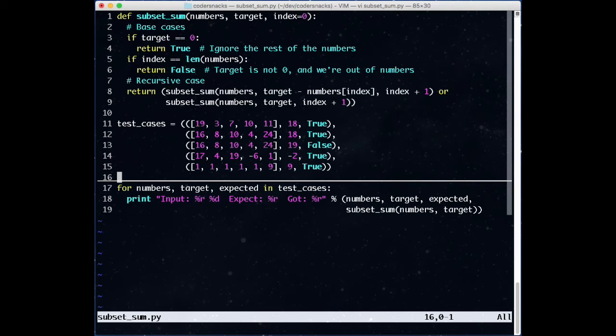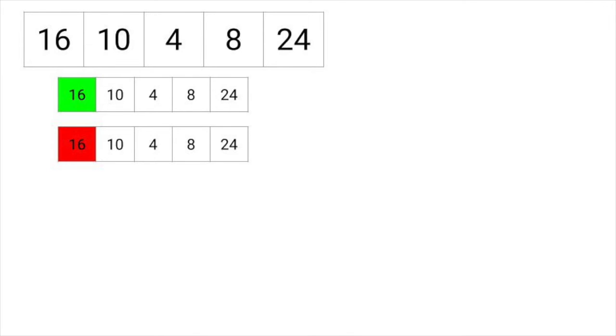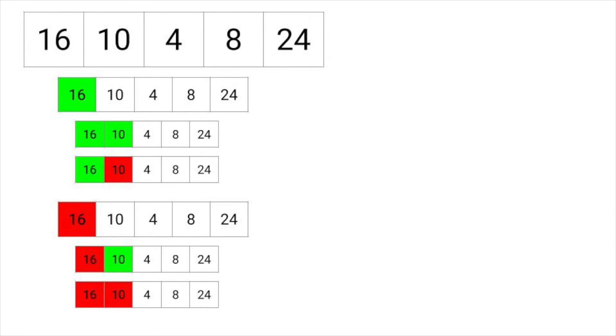Now, what's the runtime complexity of this code? For each item, we have two choices, whether we use the item or not. In each of those two choices, for the next item, we have two more choices. With two choices for every element, our runtime is O of 2 to the n. Can we do better than this?